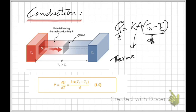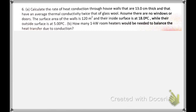Th and Tc are the temperatures, and D is the length of the rod — or the separation between Th and Tc. K is a constant called thermal conductivity. It depends on the material and has a certain value for each material.